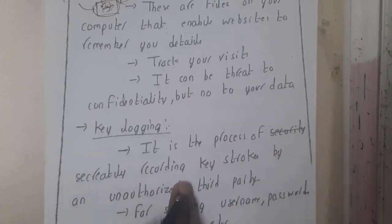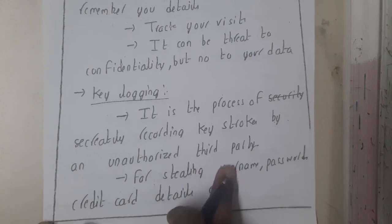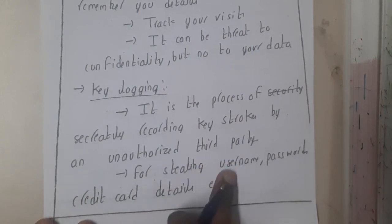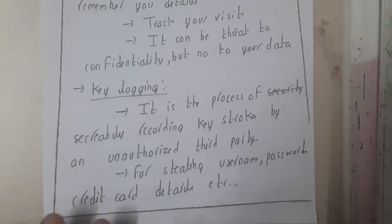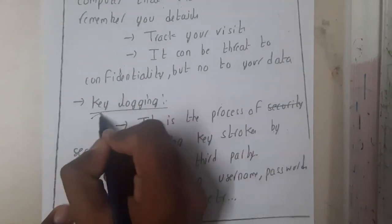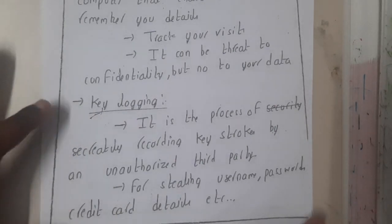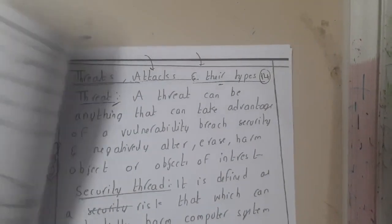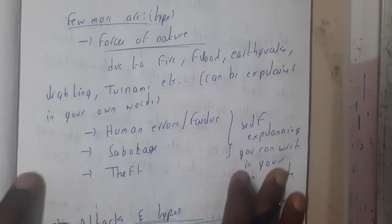Keylogging is the process of separately recording keystrokes by an unauthorized third-party application for stealing usernames, passwords, credit card details, and similar information. Private keys, public keys, and other sensitive credentials can all be tracked through keylogging.